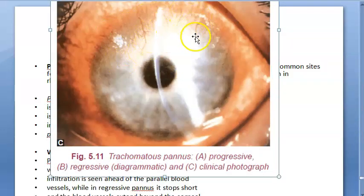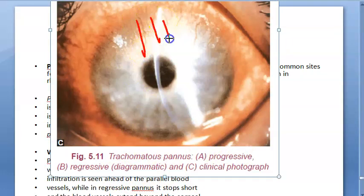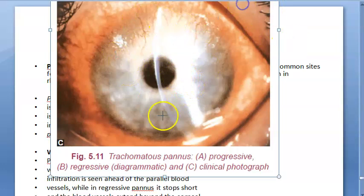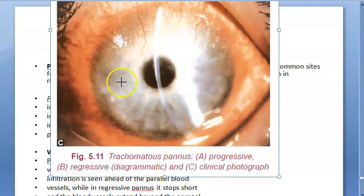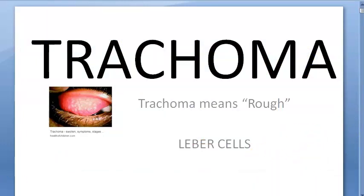Looking at this clinical photograph, you can clearly see parallel blood vessels — this is trachomatous pannus. The blood vessels appear to extend beyond the infiltration. So what do you think — is this progressive or regressive pannus?